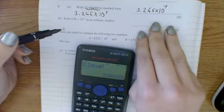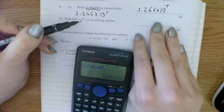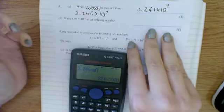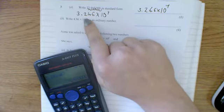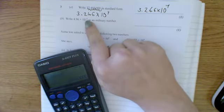For part B, we've got 4.96 times 10 to the power of negative 3. We want to write that as an ordinary number. When it's a negative power, this is a small number. The numbers are moving in the opposite direction.